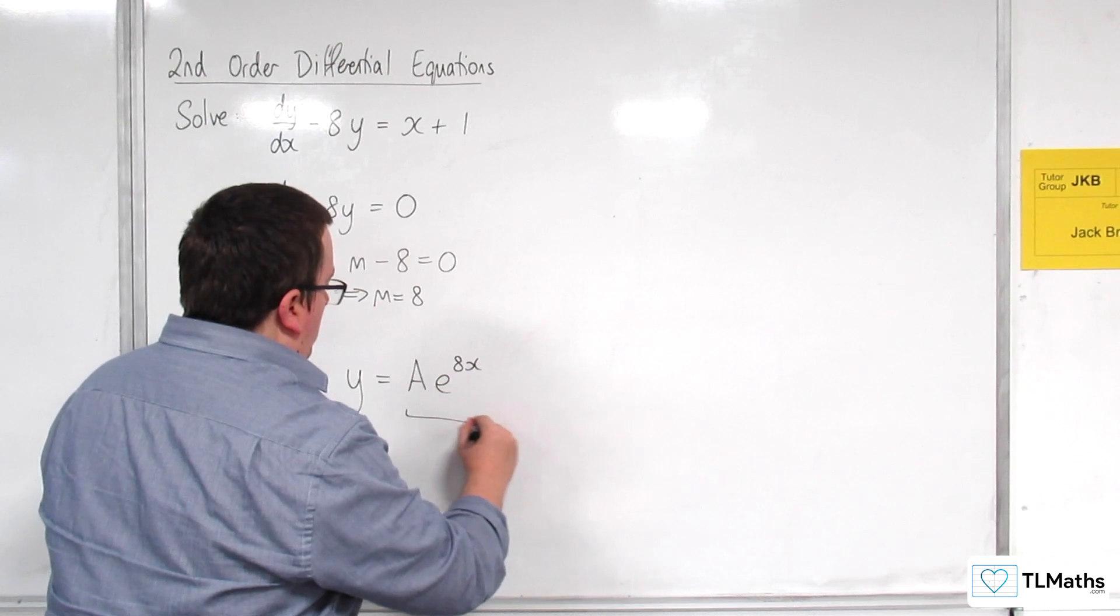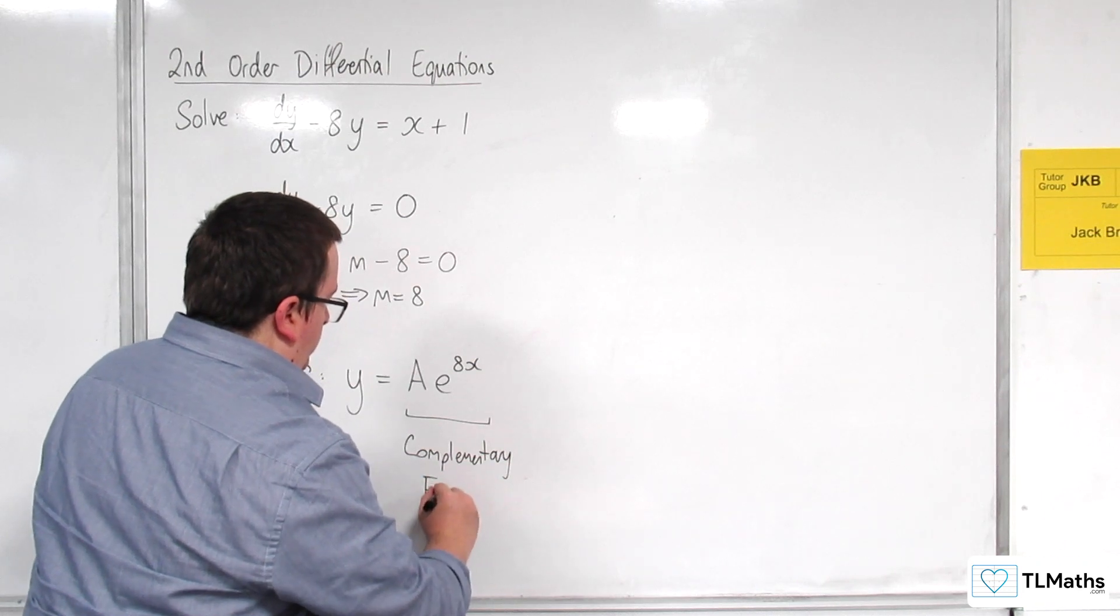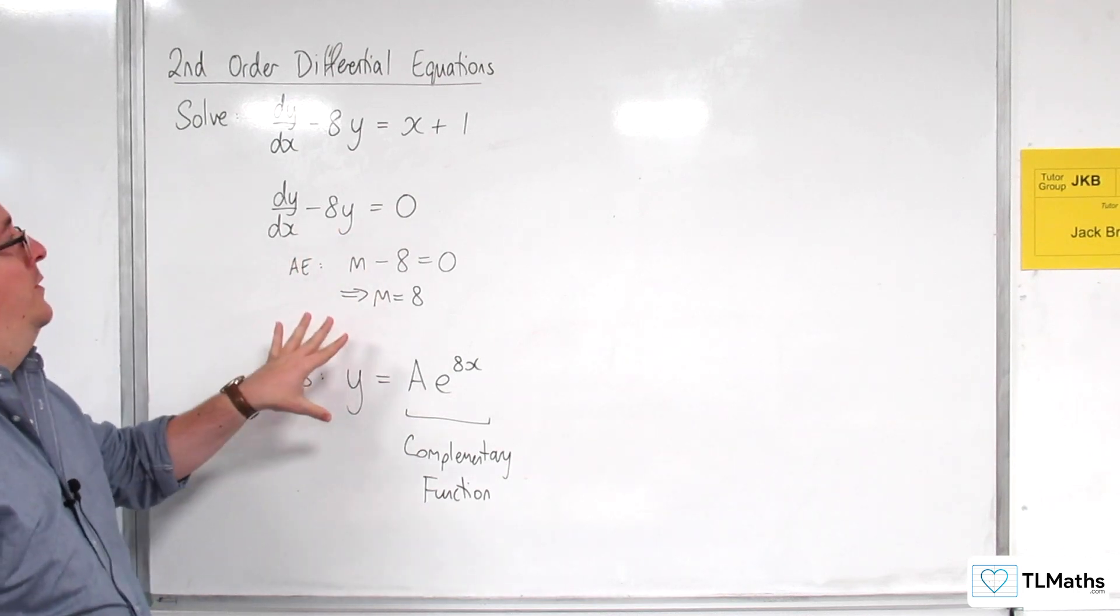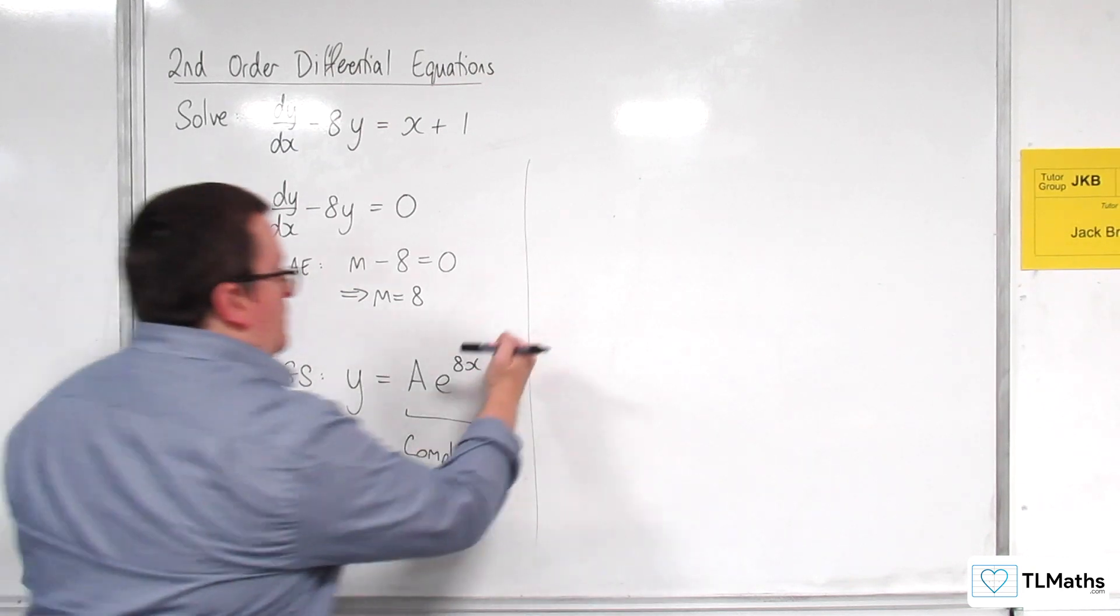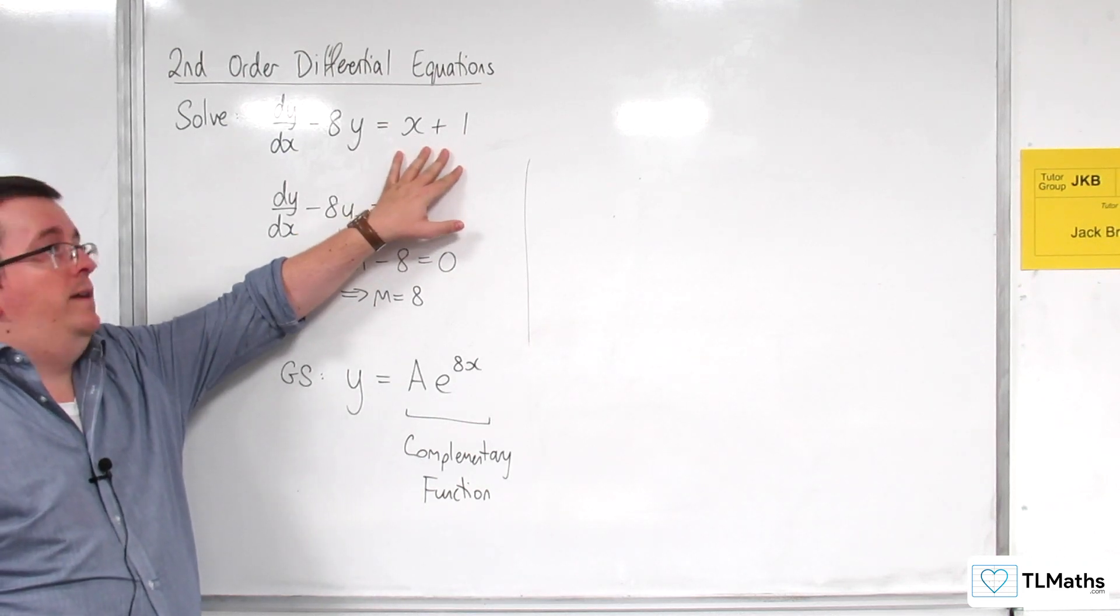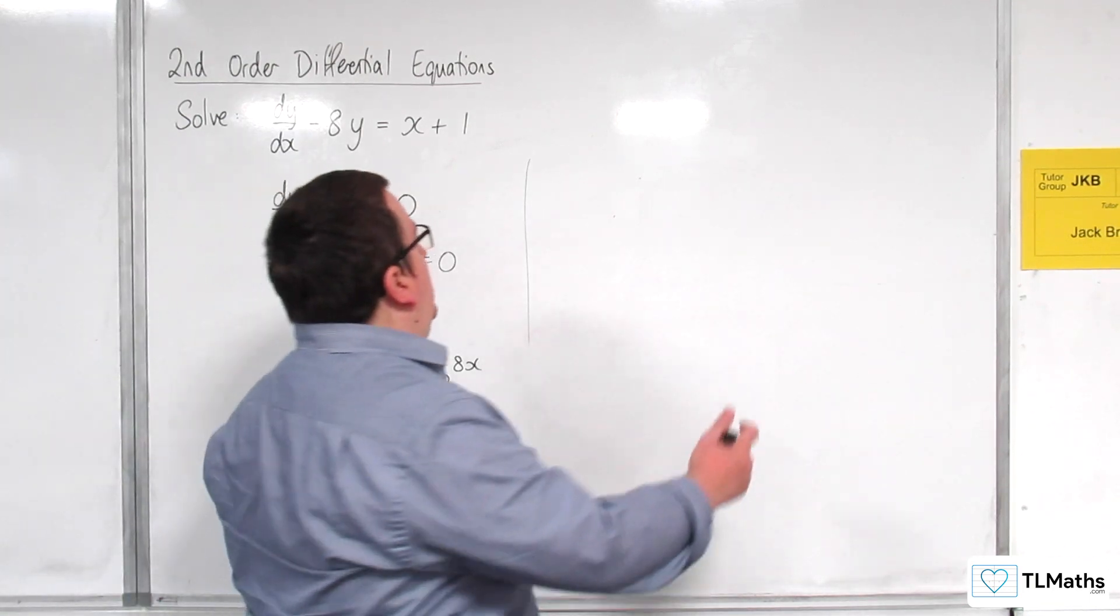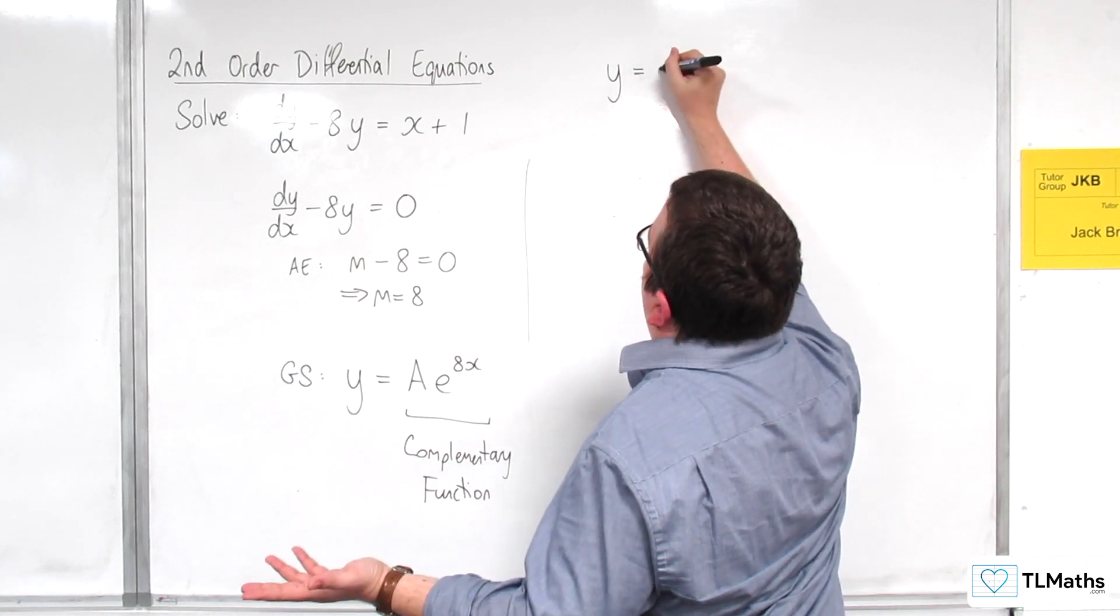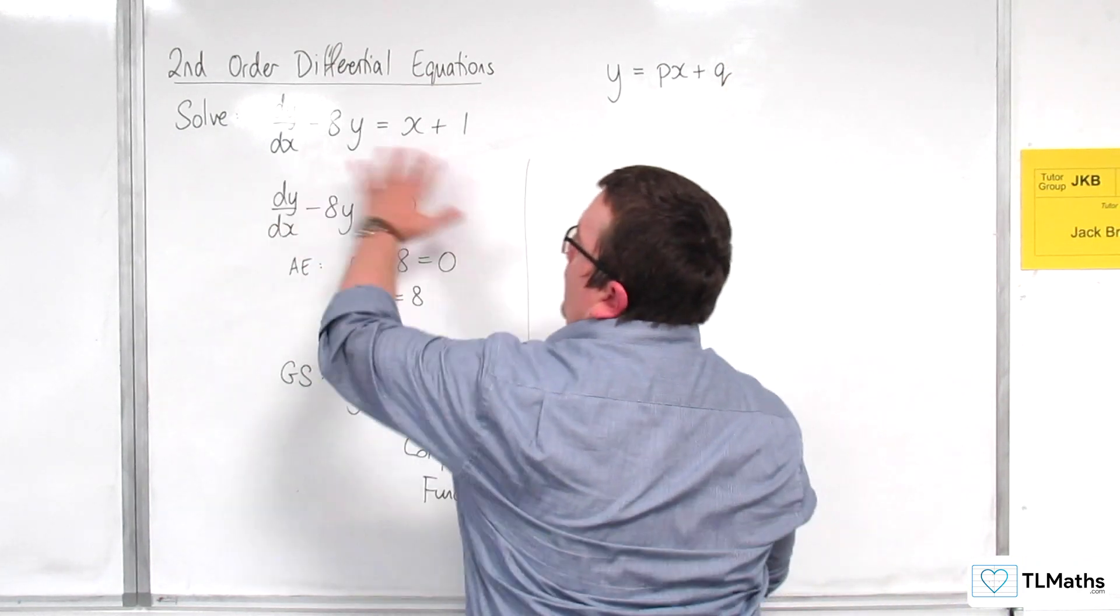So this is the complementary function. Okay? So that solves the homogeneous case. Right, then, what I do, I'll block off that part, then what I'll do is I'll look at the right-hand side and say, right, I've got a linear term here, x plus 1. So what I'll do is I will take a punt and try y is equal to, let's say, px plus q.